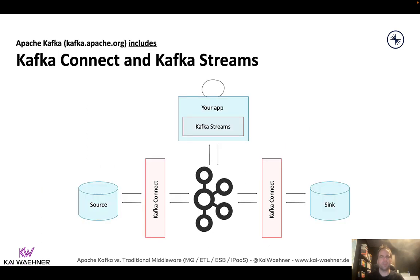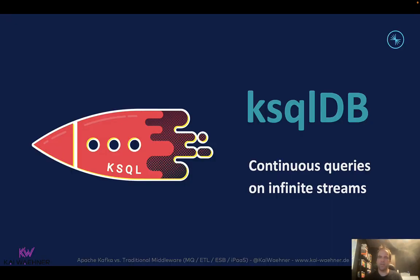With Kafka Connect and Kafka Streams, you can do data integration and data processing on top of the core. Many people still only know the Kafka core — the messaging and storage part — but even open source Apache Kafka is much more than that. On top of that you have frameworks like ksqlDB, where instead of writing Java code you write SQL queries for continuous data processing. You can also combine Kafka with Apache Flink, though then you have different infrastructures to set up and operate, which makes end-to-end SLAs for latency, availability, and data loss harder to manage.